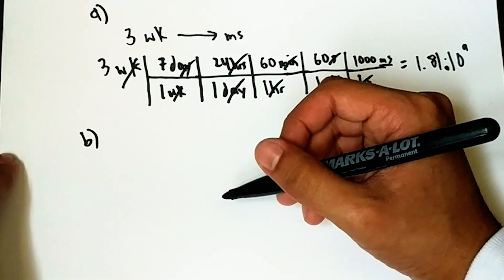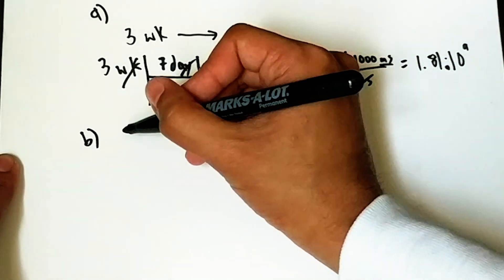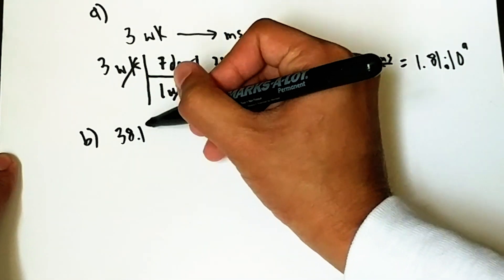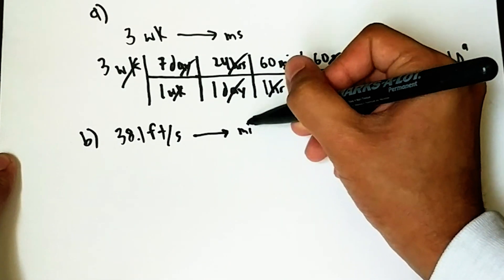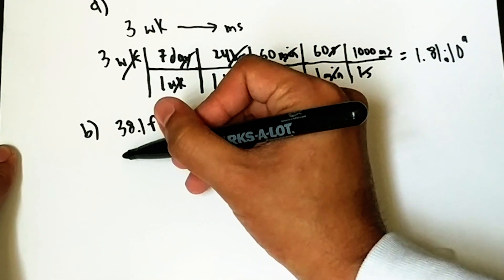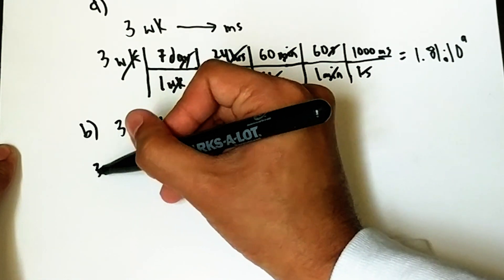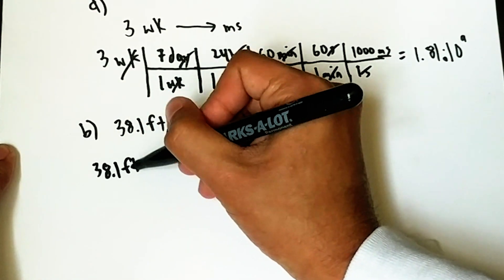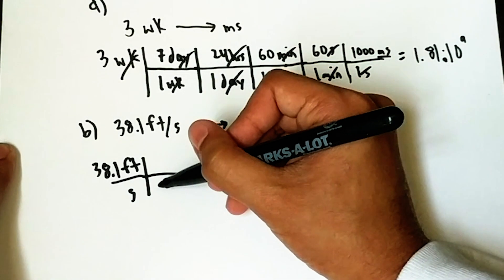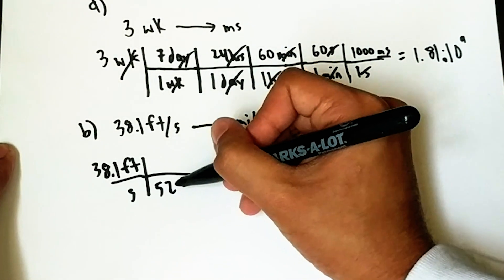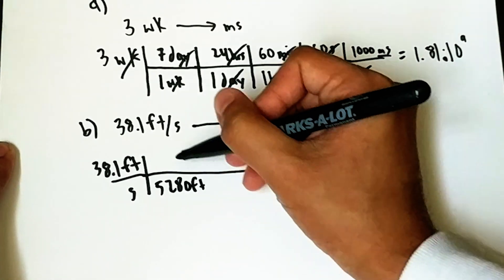All right. Part B. Part B. We want to convert 38.1 feet per second to miles per hour. So, again, 38.1 feet on top per second on bottom.